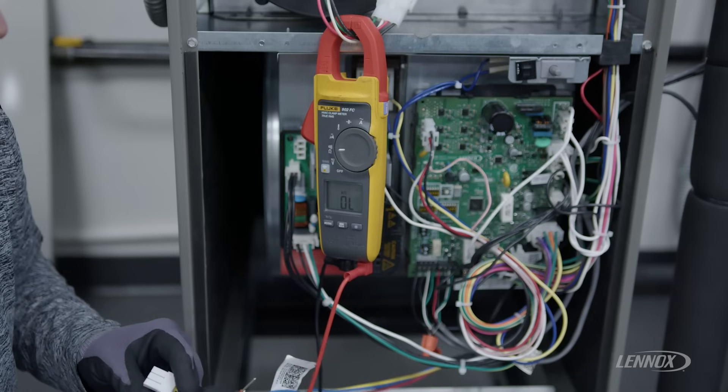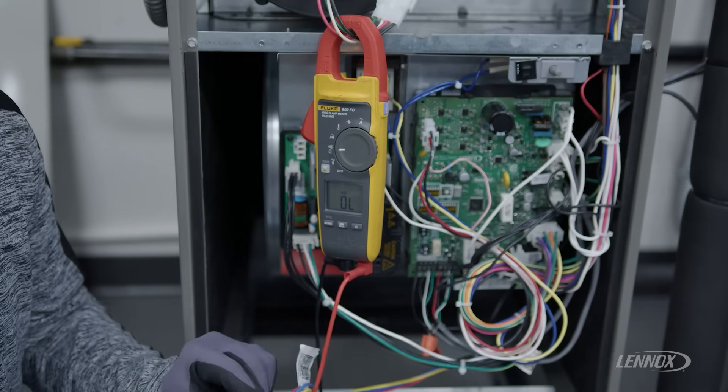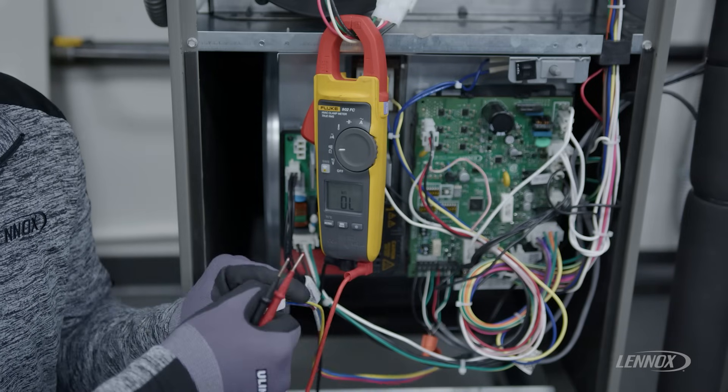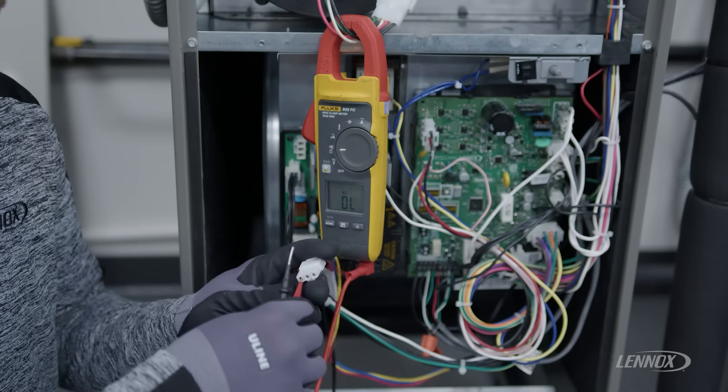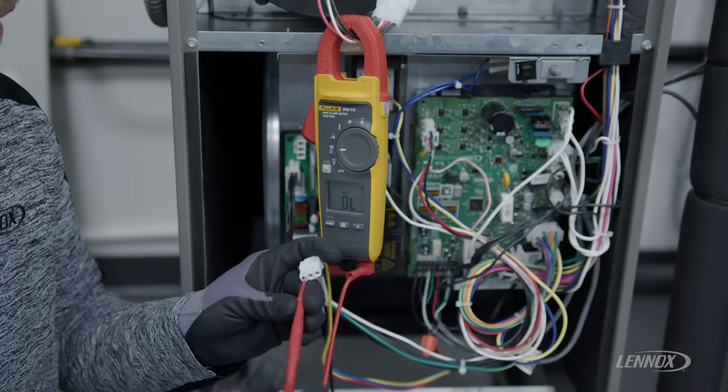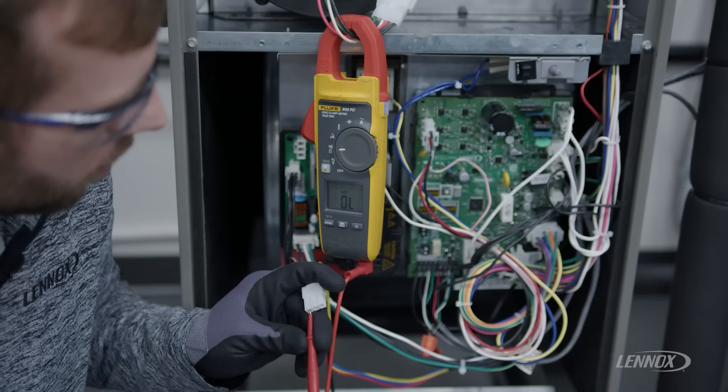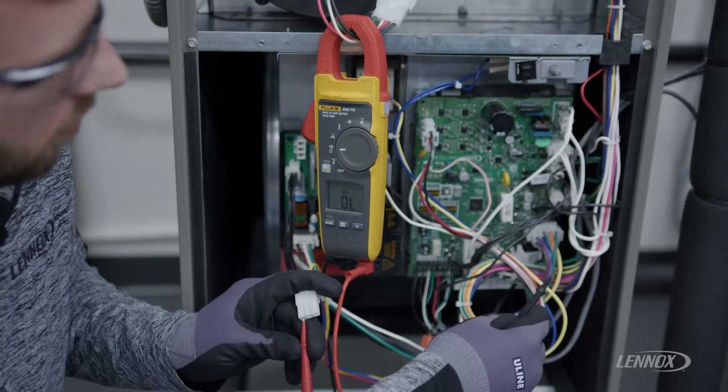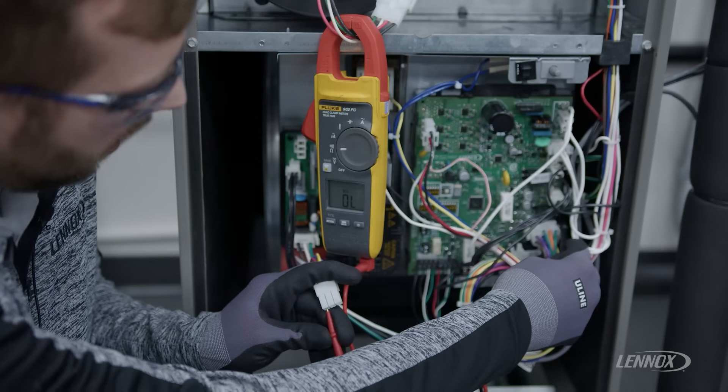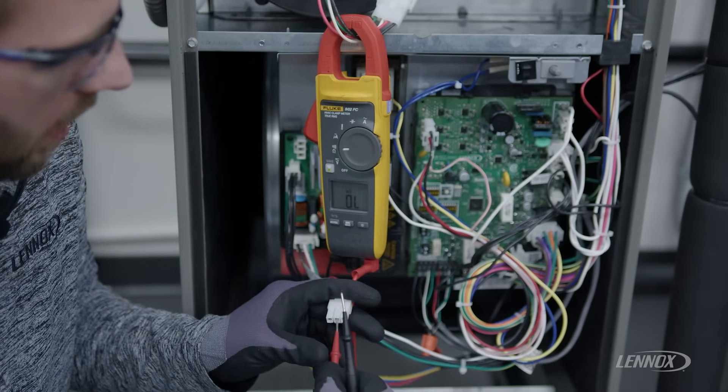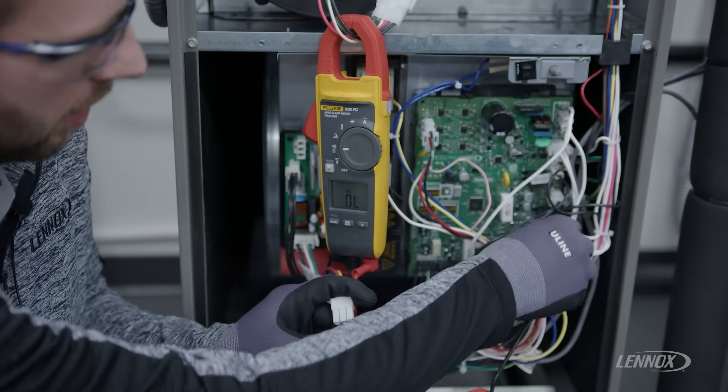The last test that you would want to do to verify the integrity of the motor is to check the resistance of each of the windings to earth ground. To do so, you would simply take one lead from your meter into one slot of your molex plug, and take your other lead and test it to a good earth ground. A good reading on each of these should read zero ohms, indicating that we have no continuity between any of the motor windings and ground.